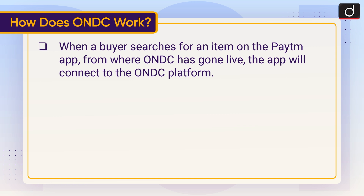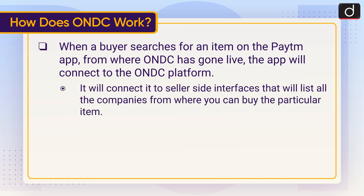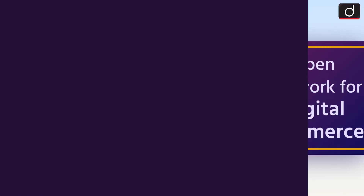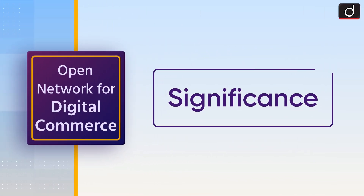The ONDC platform will connect the buyer to seller-side interfaces that will list all the companies from where you can buy the particular item. On ONDC, there will be several other back-end partners such as logistics service providers, enterprise resource planners, e-commerce store hosting service providers, and more.